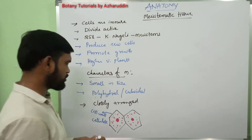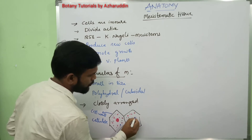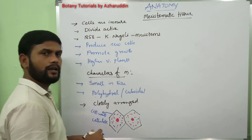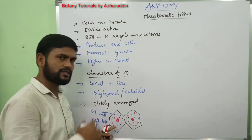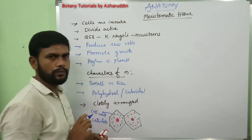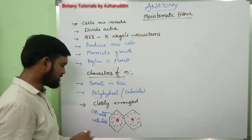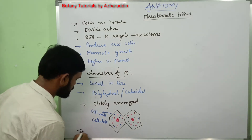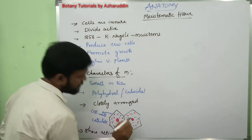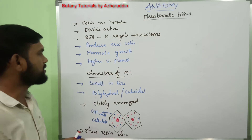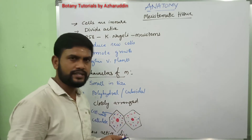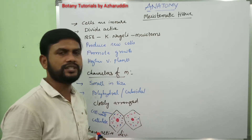Proplastids are also found in the cytoplasm. After some period of time, these proplastids develop into plastids. Such structures are found in the cytoplasm and these cells show active divisions. This is about the characters of meristems.